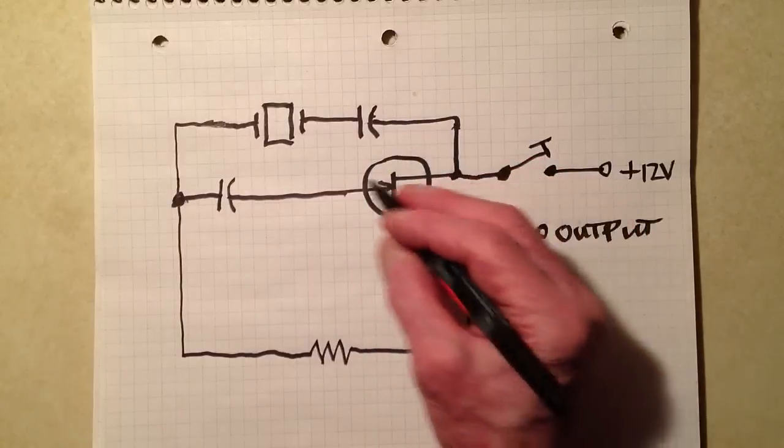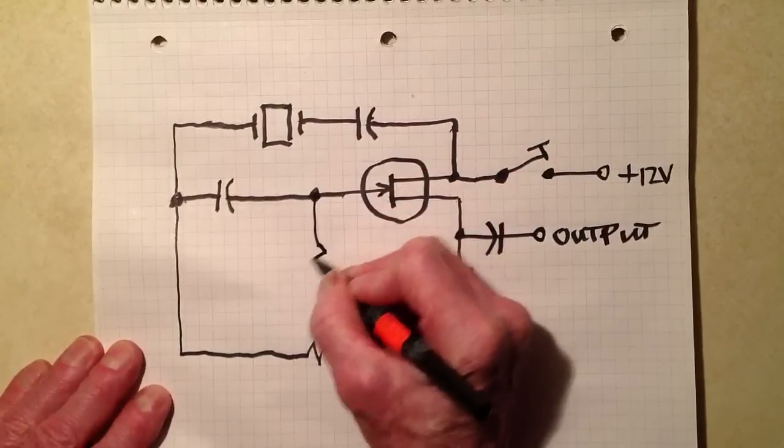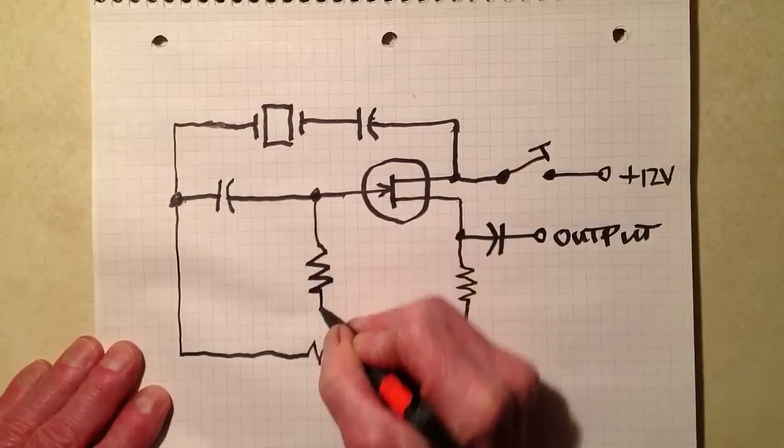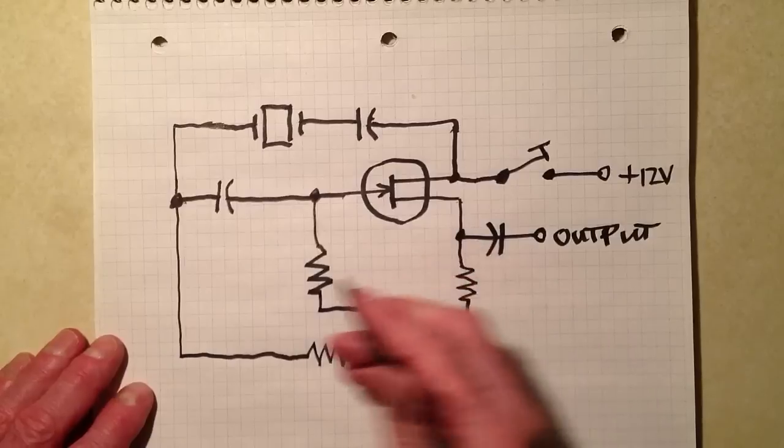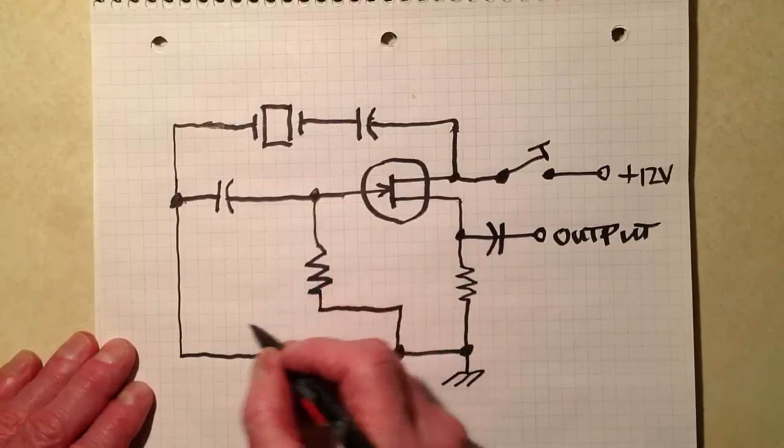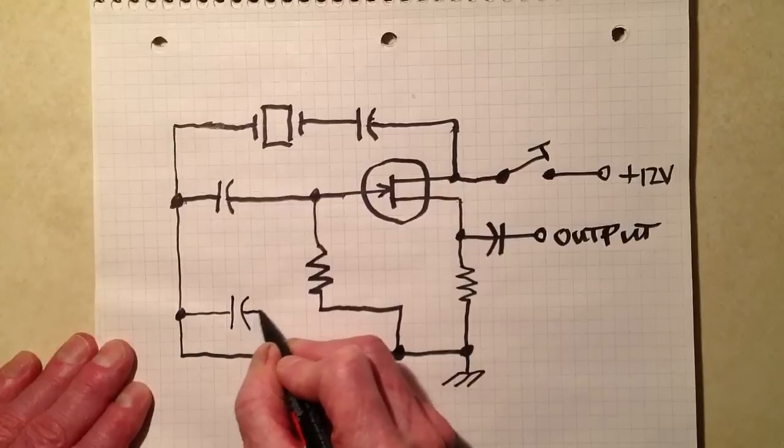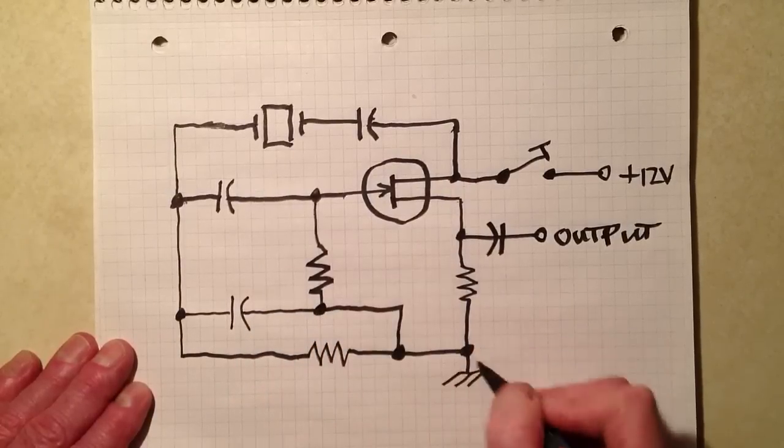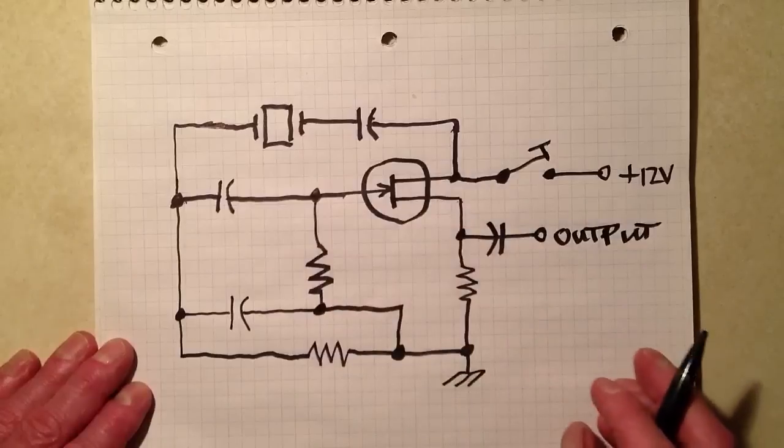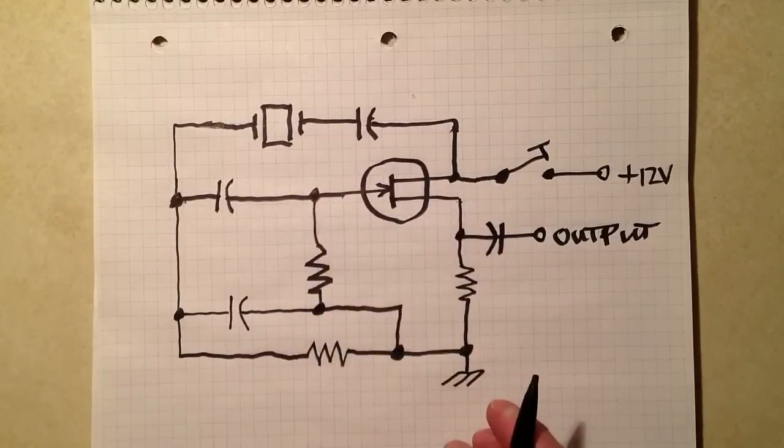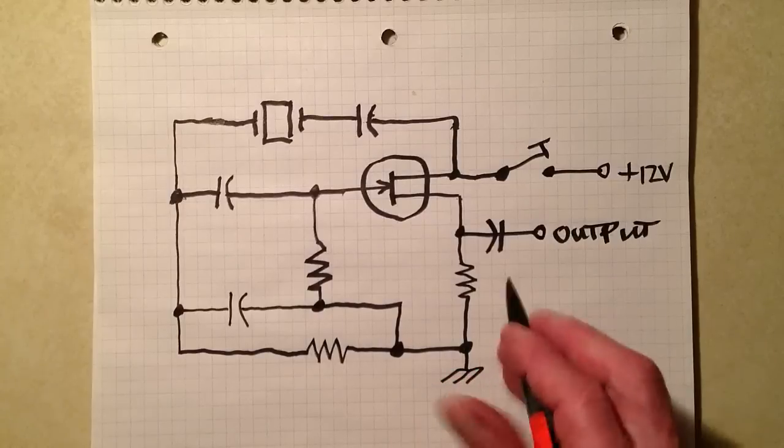Of course, we need to get some bias to this device to make it work, and we do that with another resistor like that. And then we provide a capacitor here, which helps to ensure that we don't get signal blowback or negative feedback that could interfere with the performance of the device.